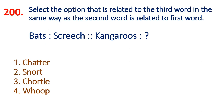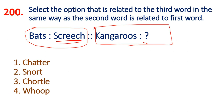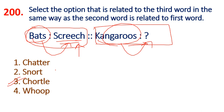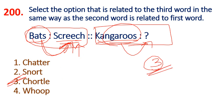Next, 200th question. What is this relationship? We can answer the answer. Bats are the same. Kangaroos are the same. We can answer the answer.